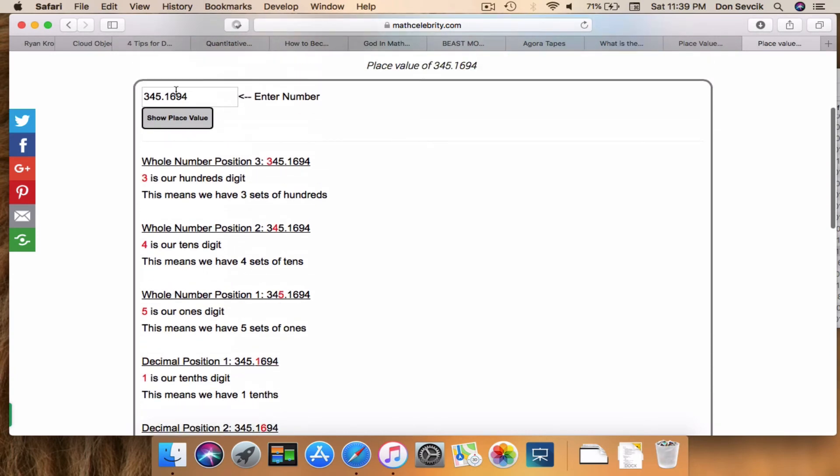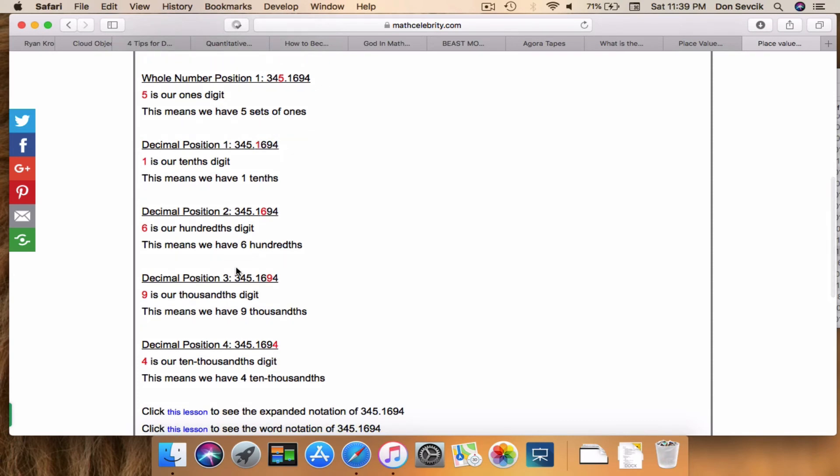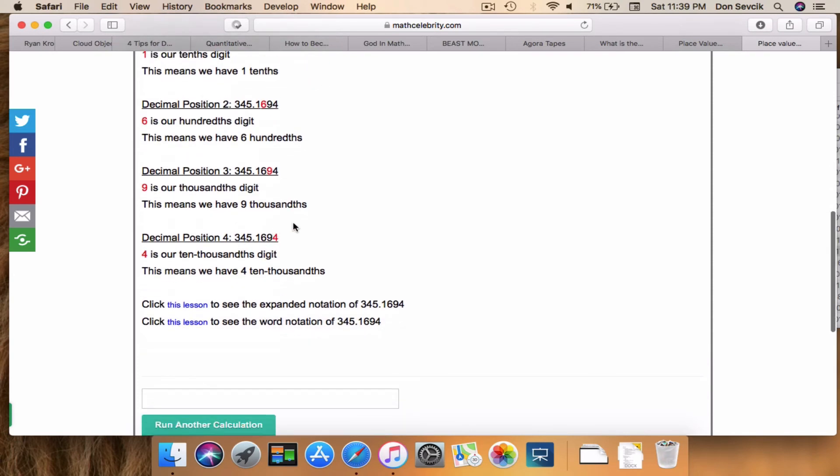And once we hit our tenth digit, it's on the right, so it's a decimal position. And it walks you all the way through. Now here's the cool part: if you want to see that full expanded notation I showed you for each place value, you just click this link here.